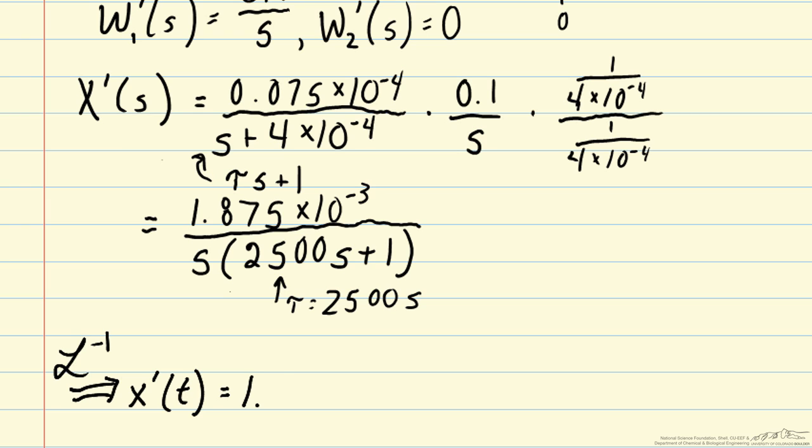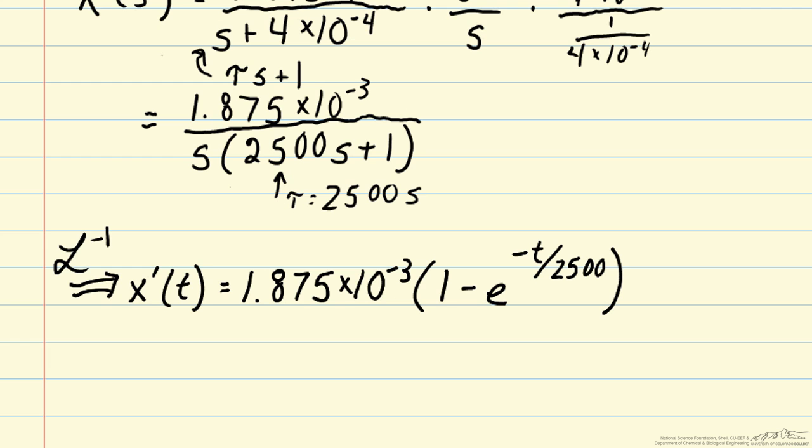We can pull out this constant term and then look up the remaining term in the Laplace transform table, which would be 1 minus e to the minus t divided by 2,500. And now maybe you can see why we refer to this 2,500 as the time constant of the process. It's the typical decay time in that exponential term.